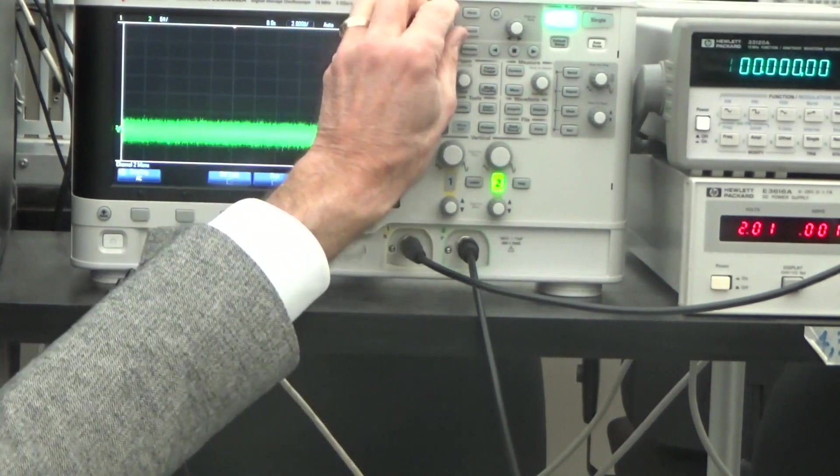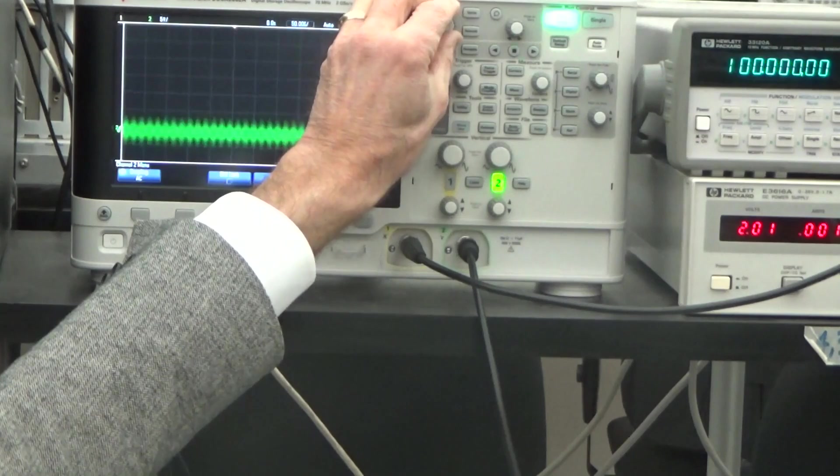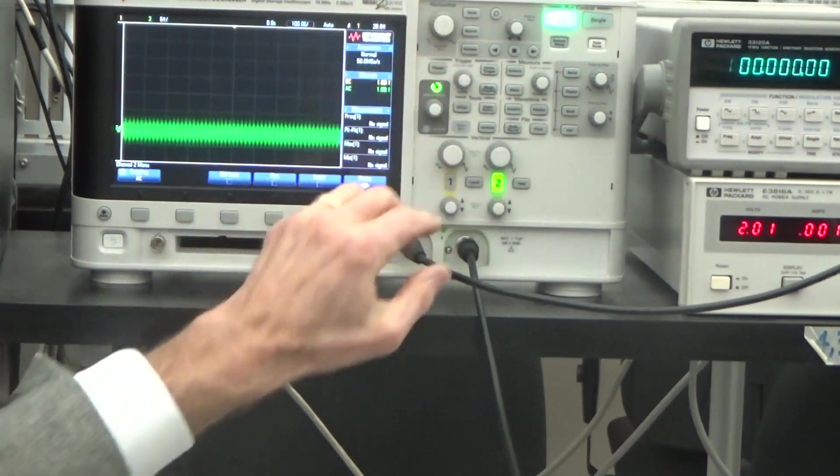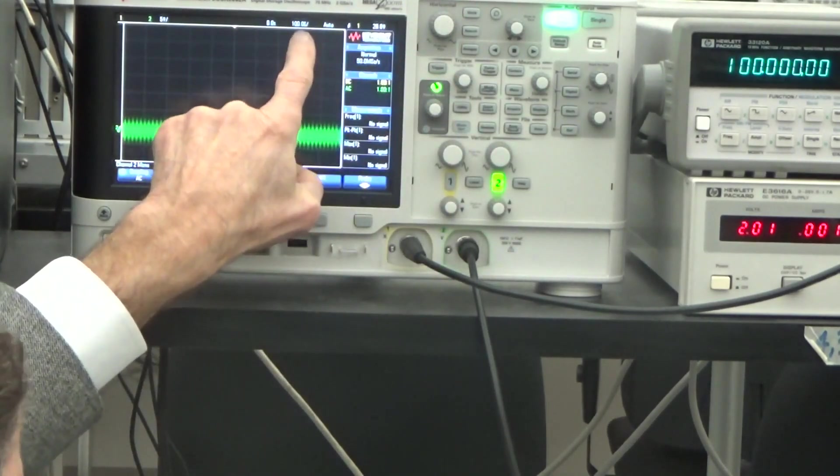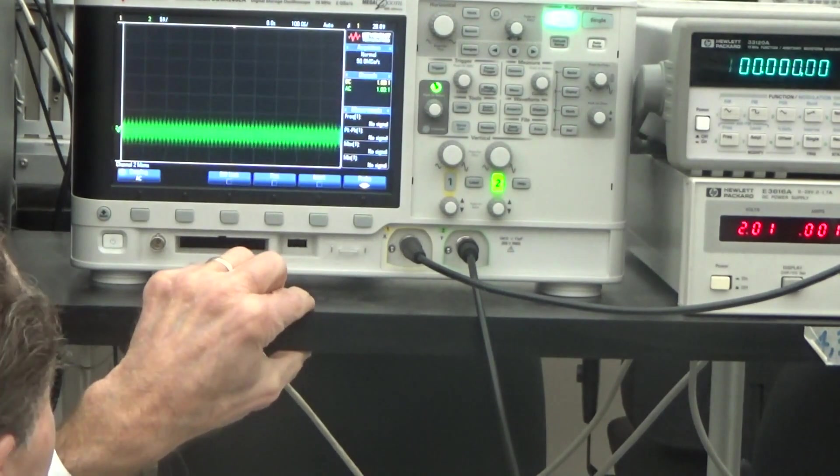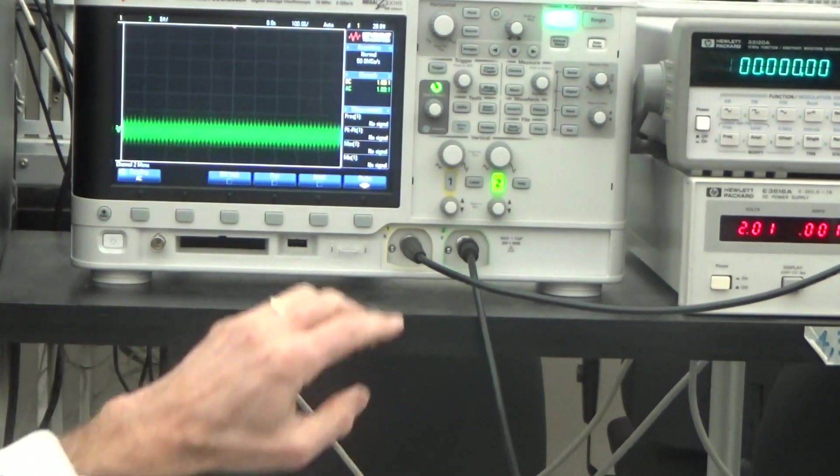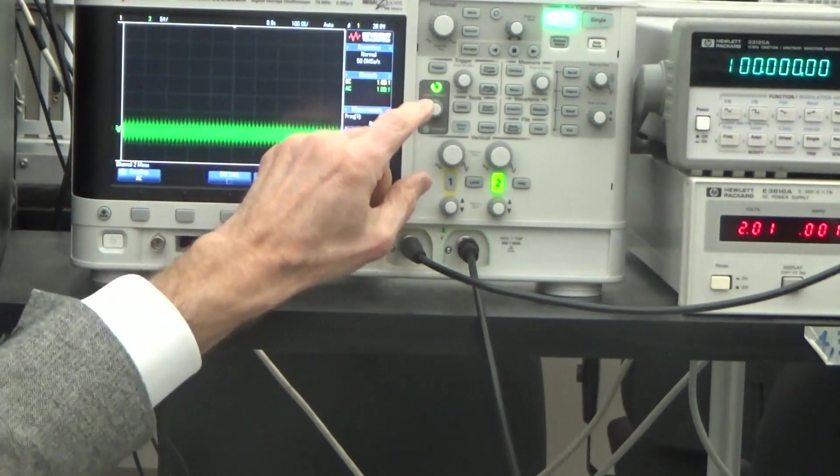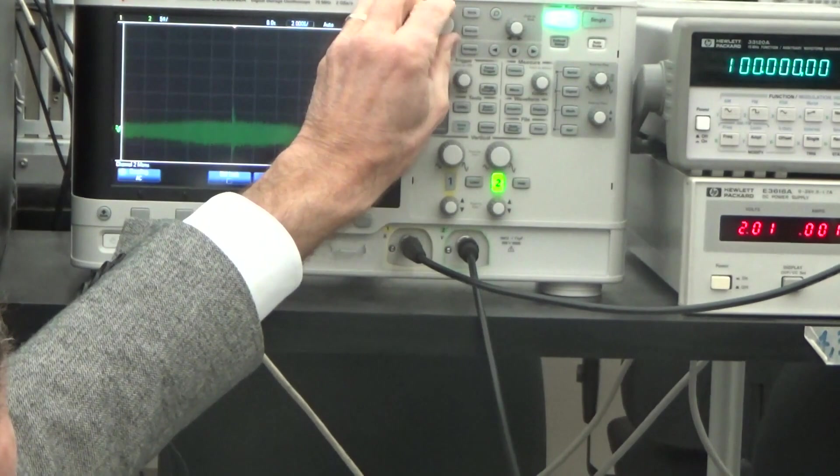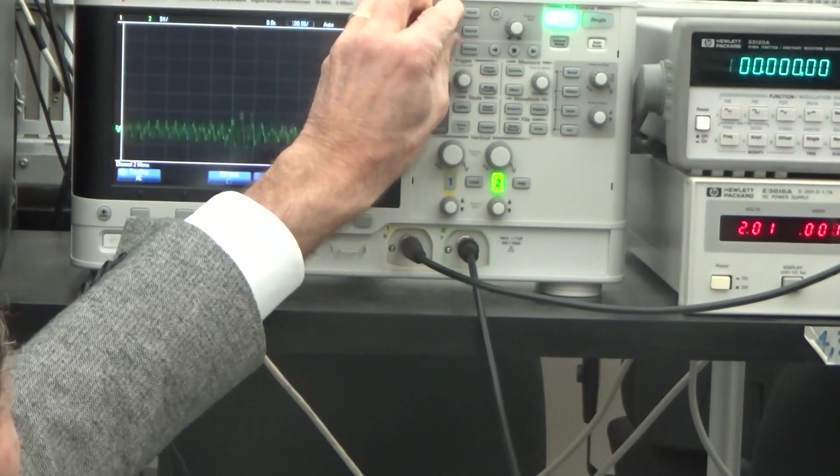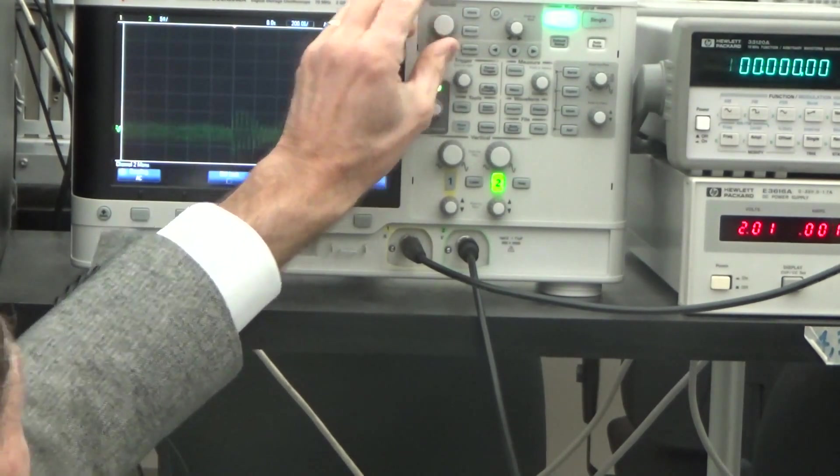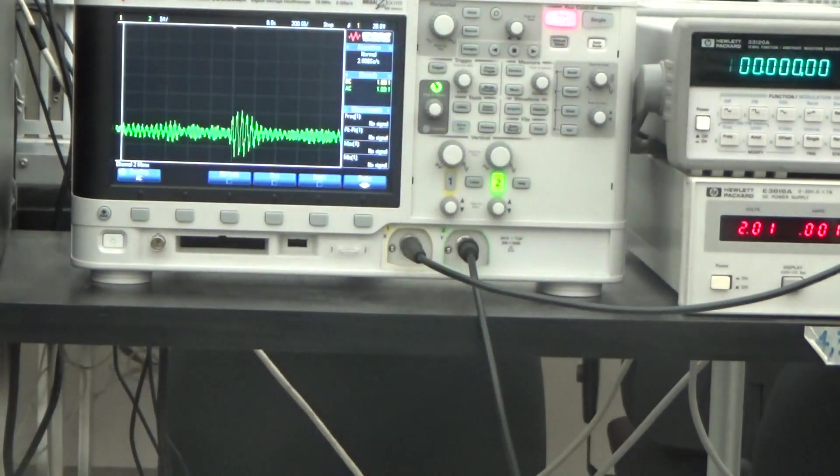And if I were to make it much more, let's see if I can do this. Okay, so now I'm running at 100 microseconds per division. You can see that there's actually some structure to this. And if I were to run it out much more quickly, then perhaps hit the stop button. Look. You can see what is actually riding on that 2 volt DC value.